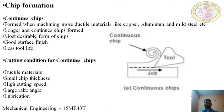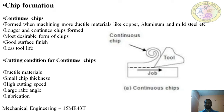The cutting conditions for forming continuous chips are: ductile material, less depth of cut, high cutting speed, large rake angle, and use of cutting fluid. Cutting fluid removes heat generated at the metal-to-tool contact zone, reducing friction and leading to continuous chip formation.